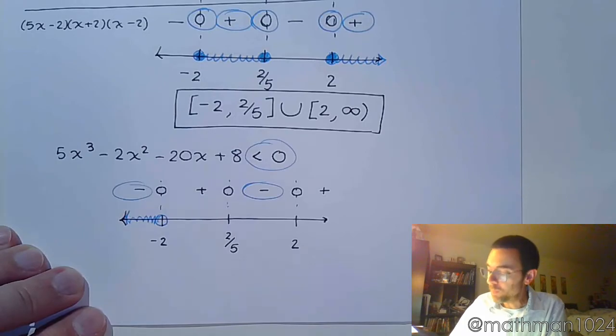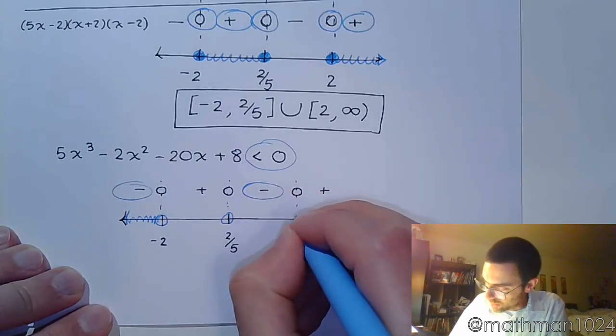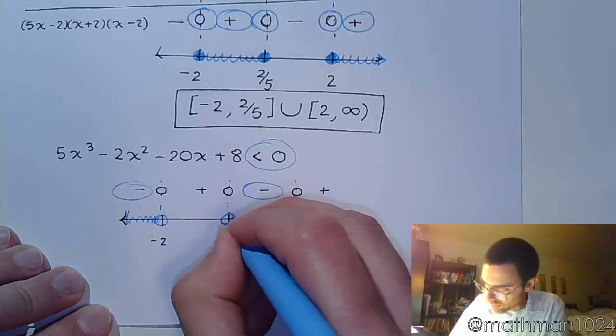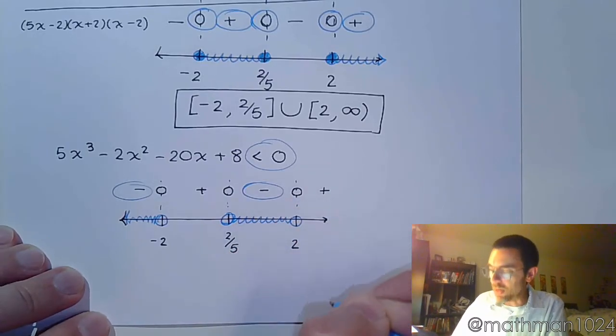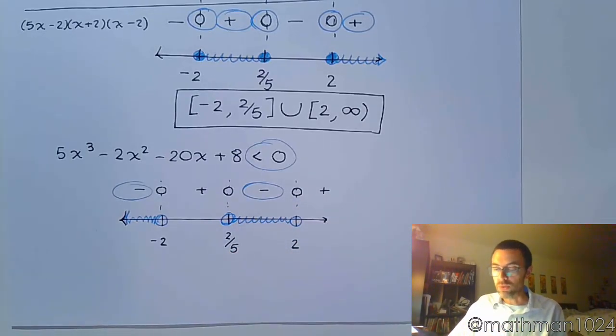which corresponds to the left side of negative 2, and then in between 2/5 and positive 2. And since it says less than but not equal to, those endpoints would remain open.